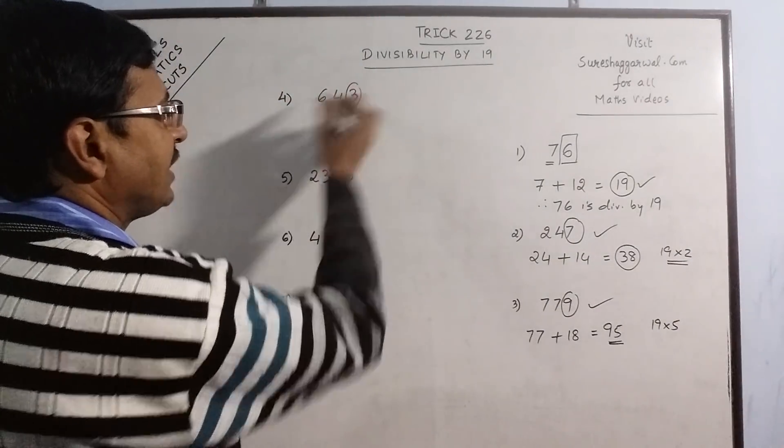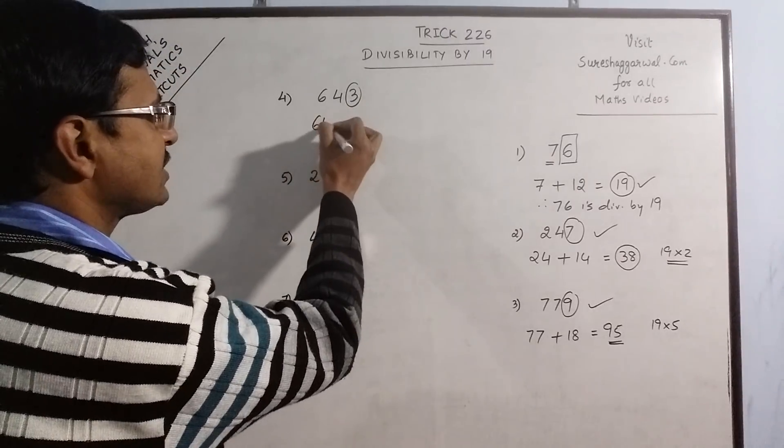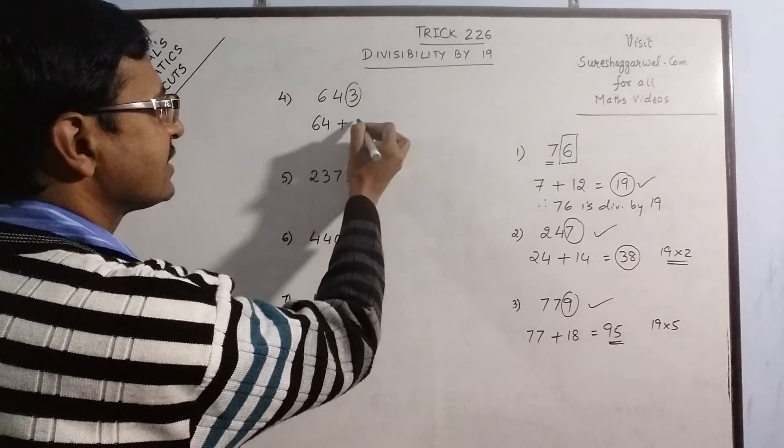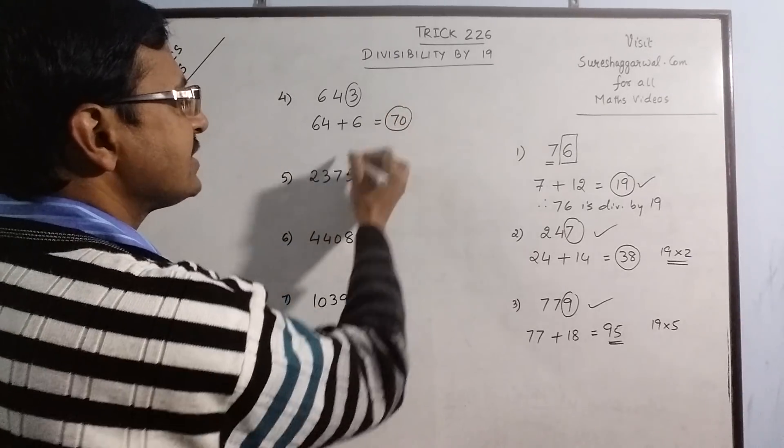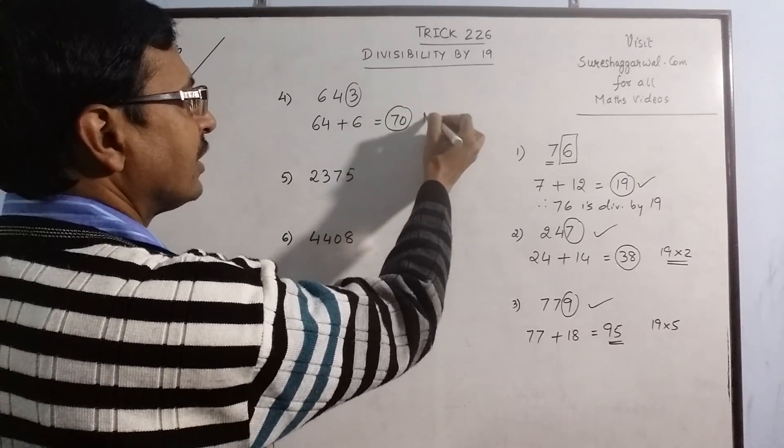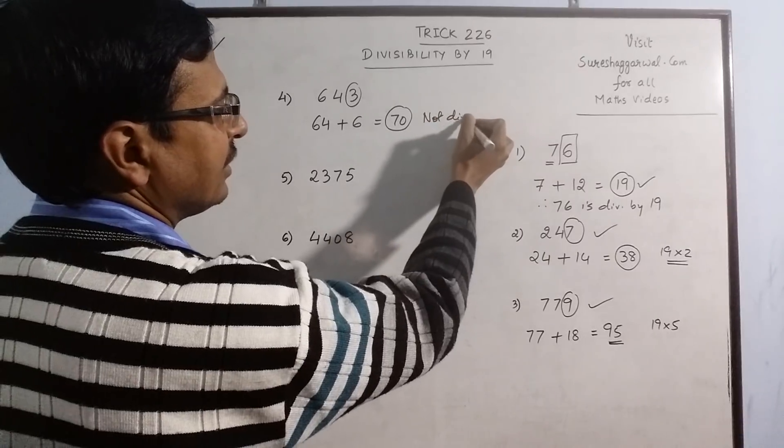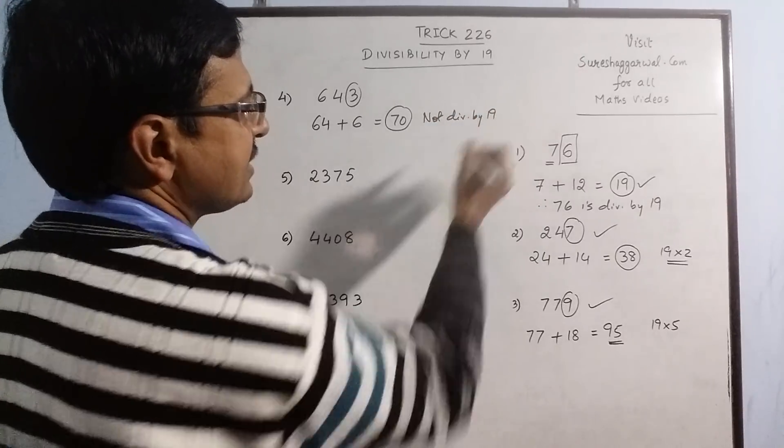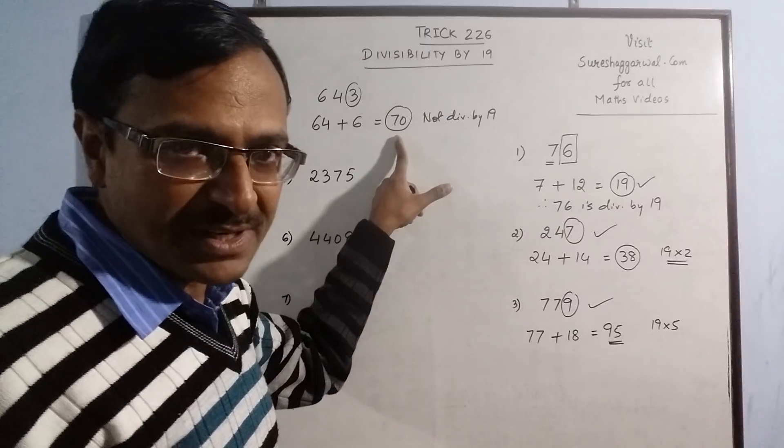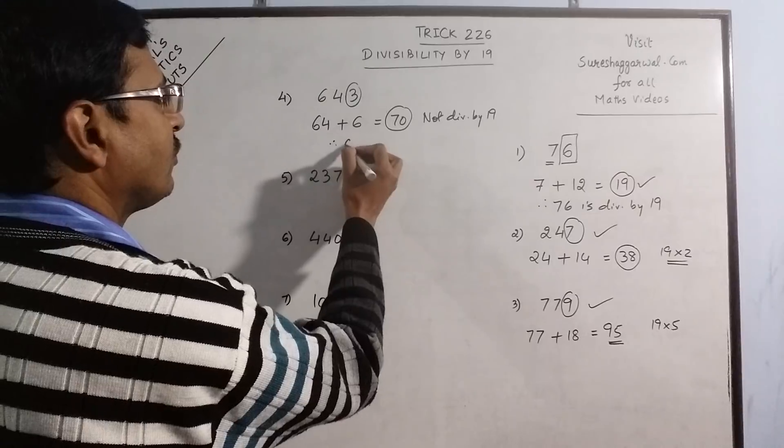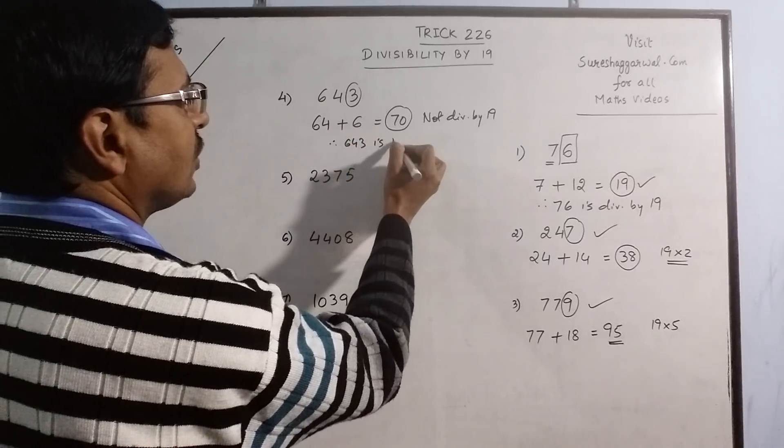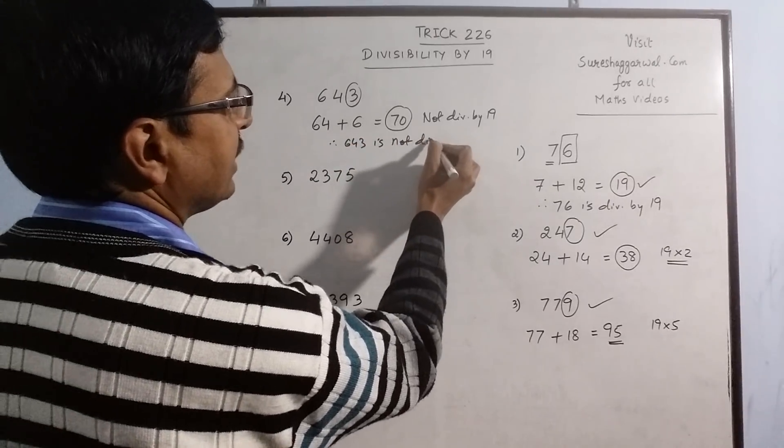For this, we have 3 as the unit space. So 64 plus if you add double of this, 6 to this, you get 70. And now you see 70 is not divisible by 19, because 19 times 3 is 57 and 19 times 4 is 76. So 70 is not divisible by 19. So 643 is not divisible by 19.